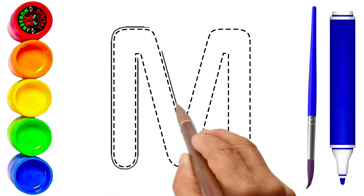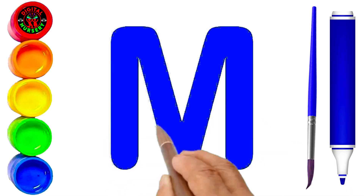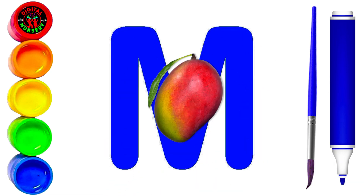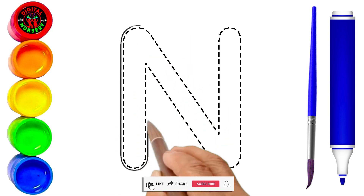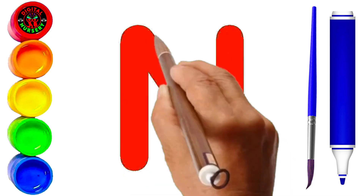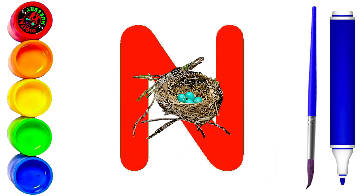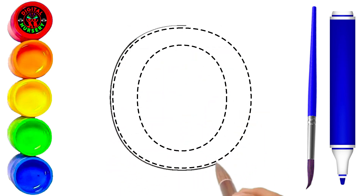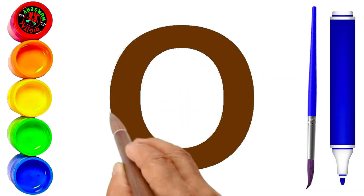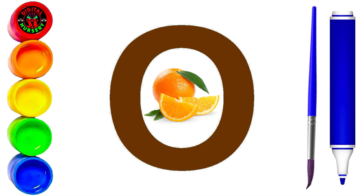M. We are tracing capital M letter by blue color. Wow, blue color of capital M. Good. Yes, M is for mango. N. We are tracing capital N letter by red color. Yes, red color of capital N. Great. Yes, N is for nest. O. We are tracing capital O letter by brown color. Yes, brown color of capital O. Wow, you are best. O is for orange.